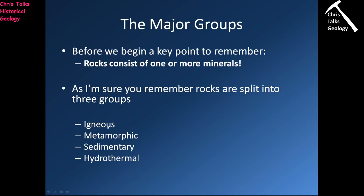Rocks are split into three groups — we have igneous rocks, metamorphic rocks, and sedimentary rocks — and then we have a fourth group: hydrothermal rocks. Now igneous, metamorphic, and sedimentary are fine. Hydrothermal is one of those situations where you have a group you could argue over. Hydrothermal essentially means hot water, so hydrothermal rocks are produced by the circulation of hot water in the Earth's crust.